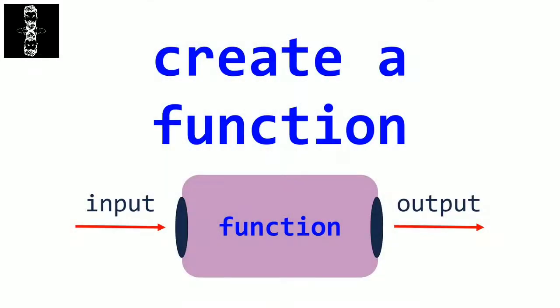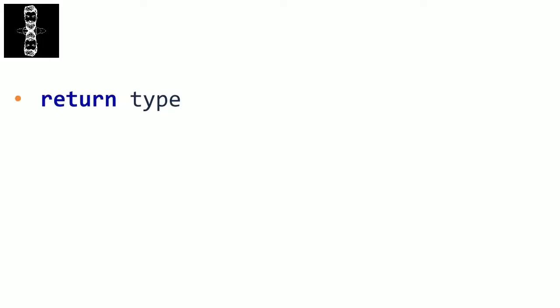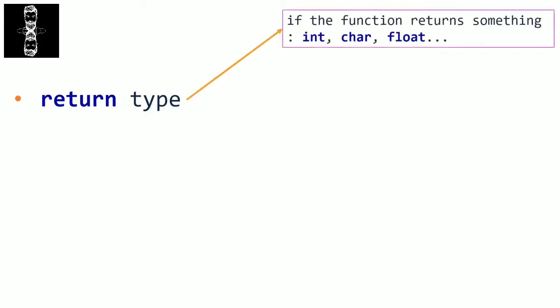Welcome to this video where we will learn what the properties of a function are and how to create one. First, we have the return type. A function can return an output. For example, if you make a function to calculate the square of a number, the square will be the result, so the function will return that square. We have to specify the data type of that result — for example, int or char.